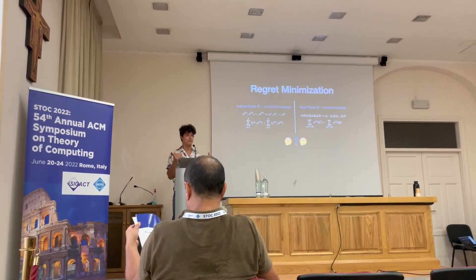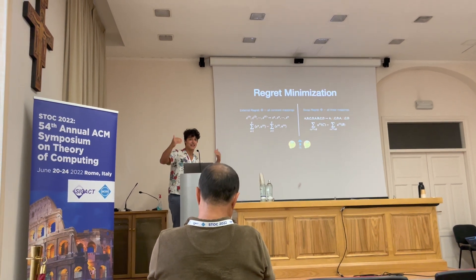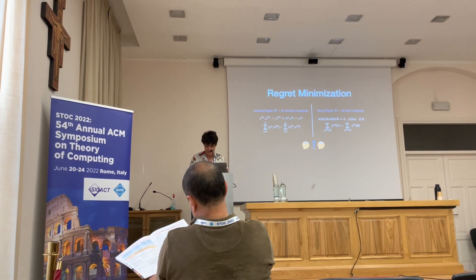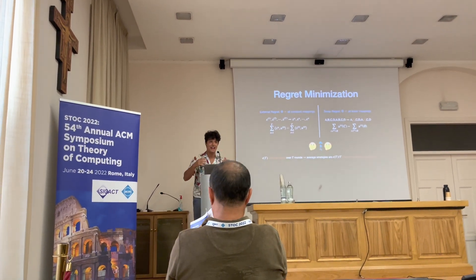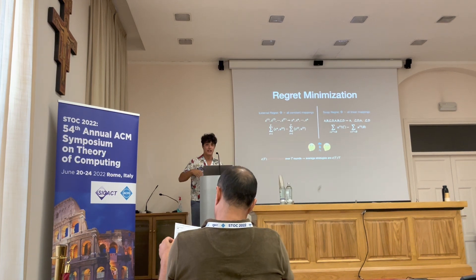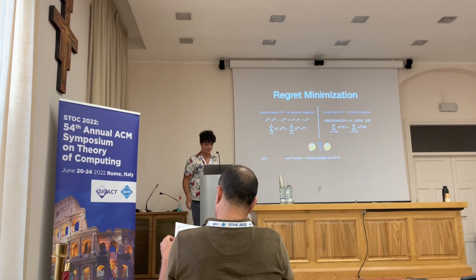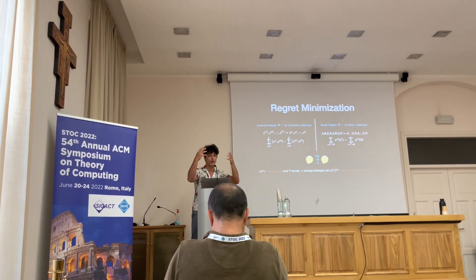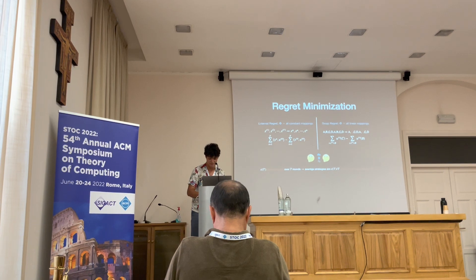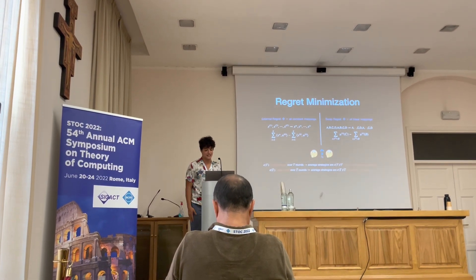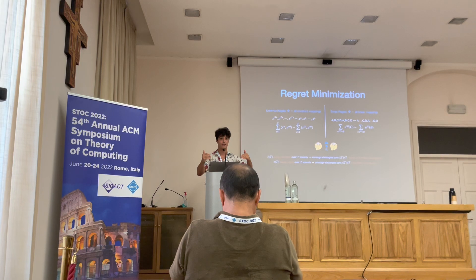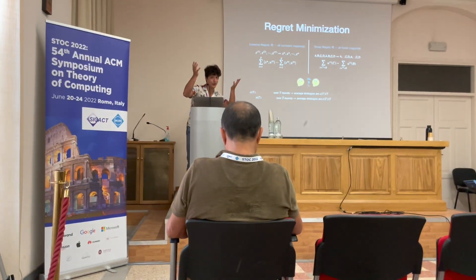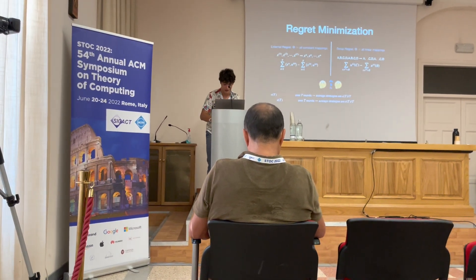Regret ties back to games. If both players run algorithms achieving sub-linear external regret over time — something like epsilon·T — we have a guarantee that their time-average strategies converge to a coarse correlated equilibrium. But if they have the even stronger guarantee of sub-linear swap regret, we get convergence in time-average to a correlated equilibrium, which is a stronger notion of equilibrium.